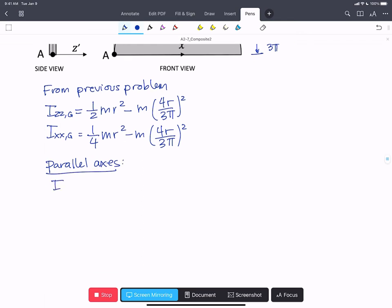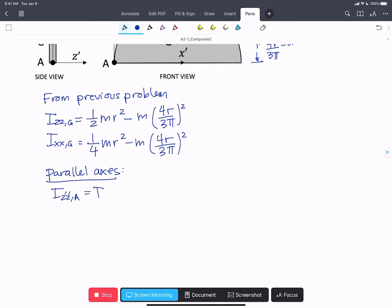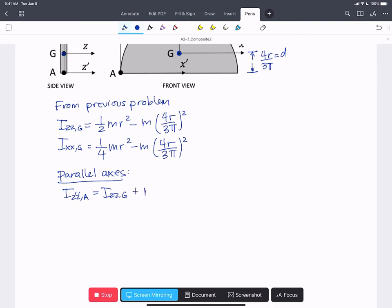So we can say i_z'z' about A is going to be i_zz about G plus mass times the distance D1 squared.